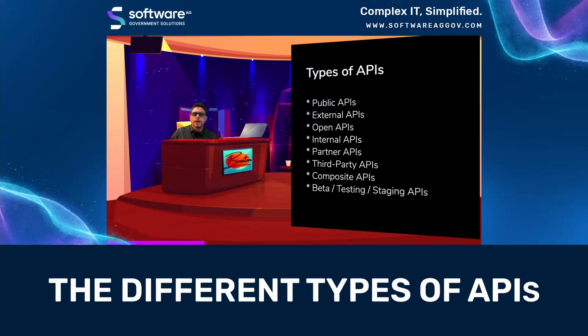You have public APIs, external APIs, open APIs, internal APIs, partner APIs, third-party APIs, composite APIs, and beta testing or staging APIs.